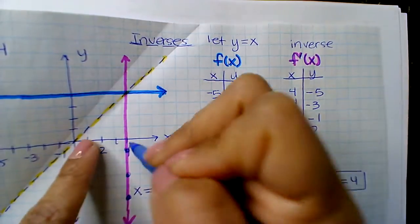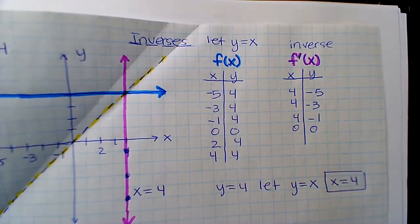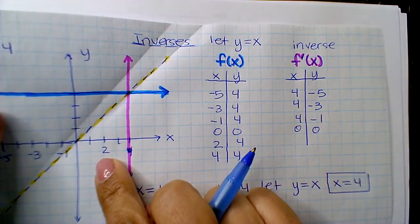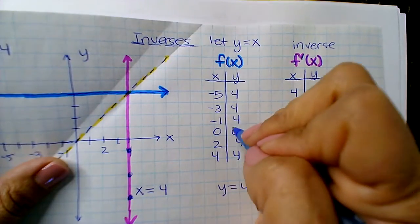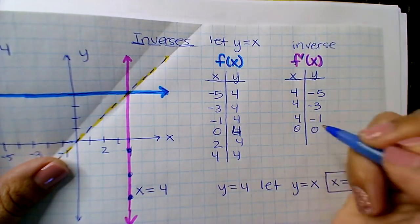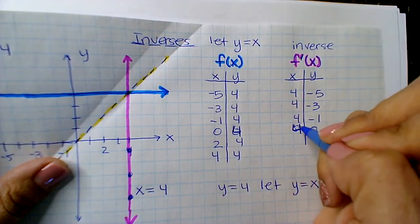0, 0 is still 0, 0. Right? Oh no, no, why did I put 0, 0 you guys? Oh, 0, 4 to 4, 0.